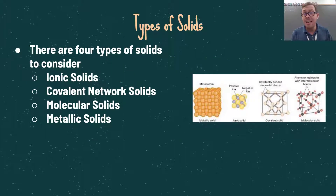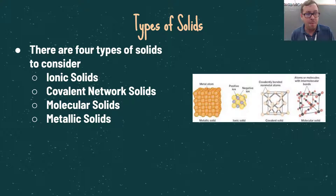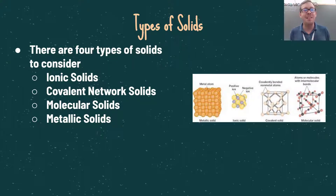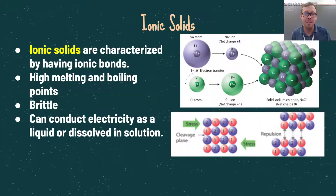Let's dive in and talk about the four specific types of solids: ionic solids, covalent network solids, molecular solids, and metallic solids, each of which have different chemical and physical properties.